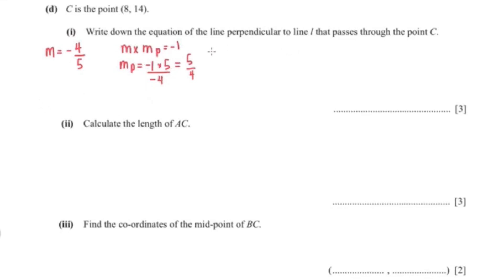Now that we found the gradient, we're still missing something, which is our y-intercept. So I'm going to use the equation y equals mx plus c by substituting the point 8 and 14 into the equation to find c. So your c is 14 minus 10 which is 4. So our equation of the perpendicular line is y equals 5 over 4x plus 4.